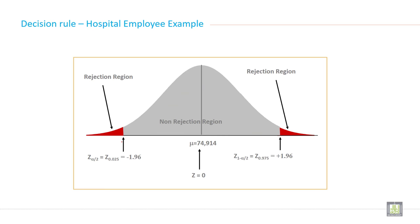Now we are discussing how you can write decision rule for hypothesis testing. So let's take the hospital employee example. In the hospital employee example, the significance level is not given.